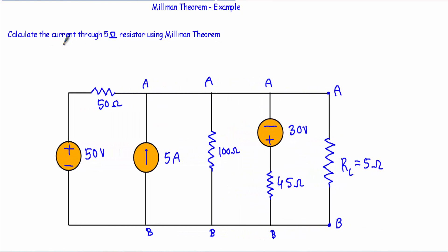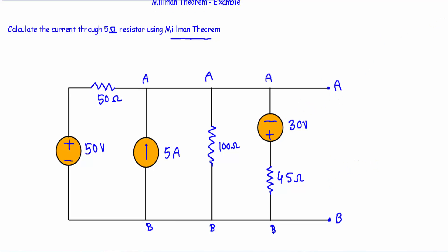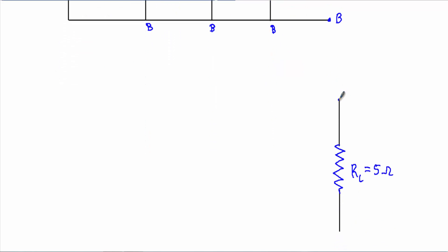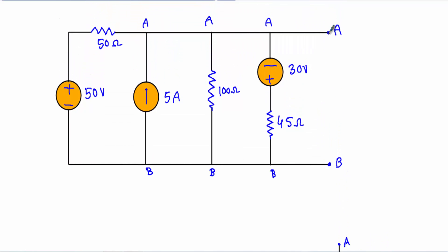To use Millman's theorem, at first I have to disconnect this load resistance from our circuit. If I disconnect the load resistance RL and keep it here, this was our A terminal and this was our B terminal. Within this AB terminal, according to Millman's theorem, I can convert this entire network to a single current source.